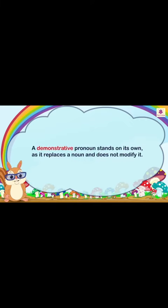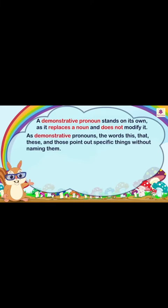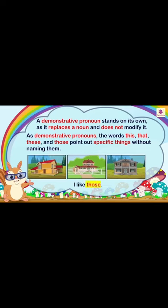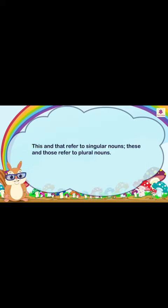A demonstrative pronoun stands on its own — it replaces a noun and does not modify it. As demonstrative pronouns, the words this, that, these, and those point out specific things without naming them. For example: 'This is good' and 'I like those.' This and that refer to singular nouns; these and those refer to plural nouns.